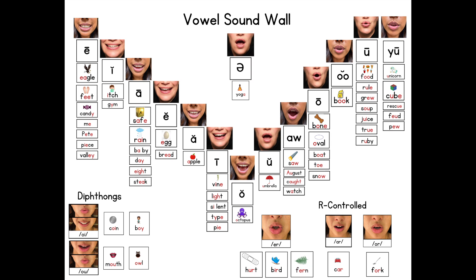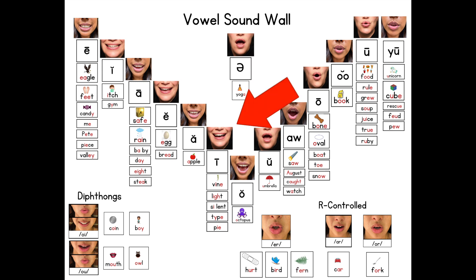Before teaching the lesson, take time to create your vowel sound wall on a large bulletin board or a portable bulletin board. Refer to the individual vowel sound wall included in the lesson printable for placement of phonemes, mouth articulation photos, and graphings.